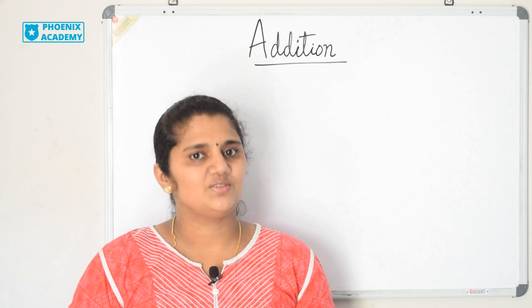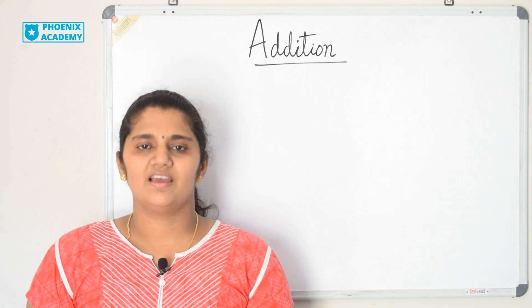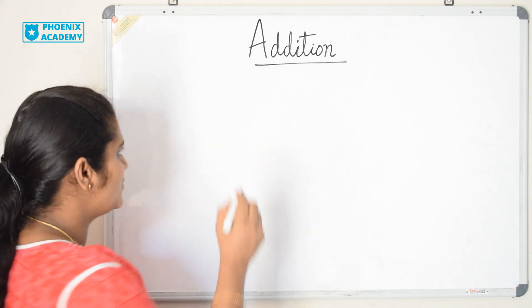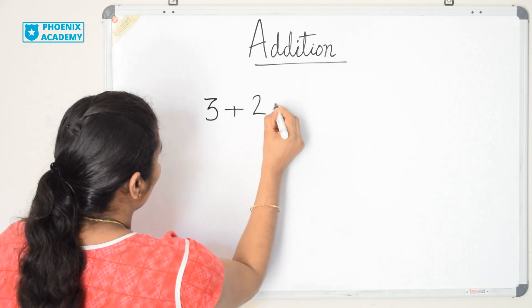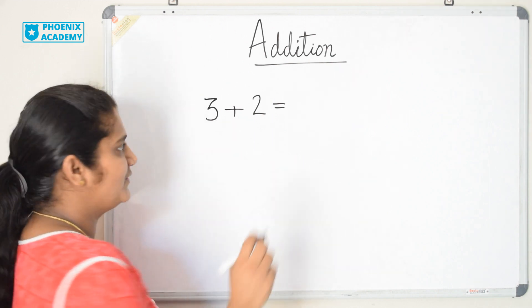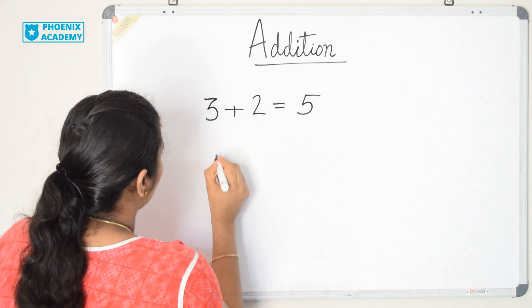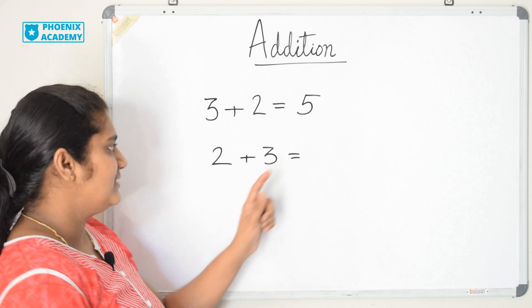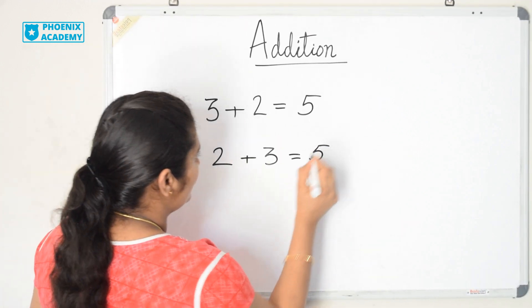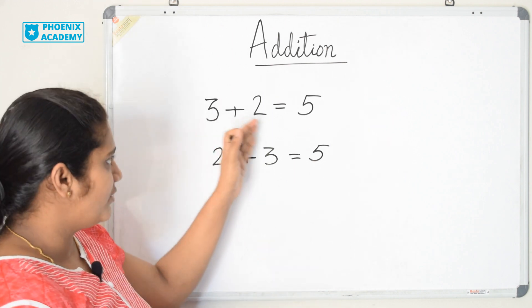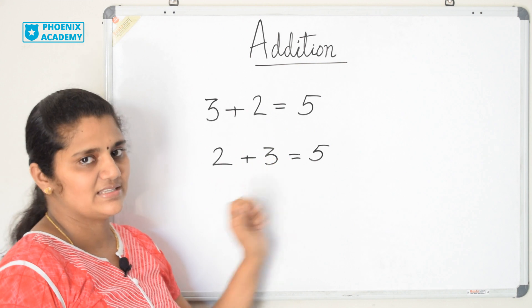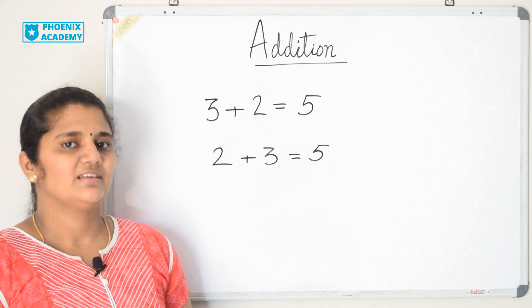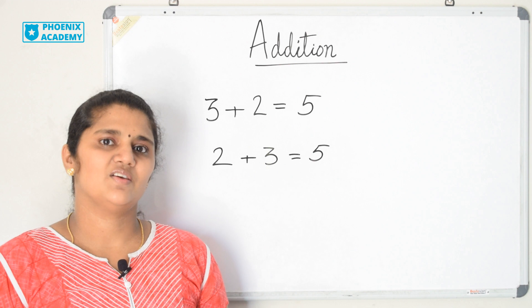Addition is combining two or more things or objects together and counting the combined collection. What is 3 plus 2? 3 plus 2 is 5. And what is 2 plus 3? This is also 5. So in class 2, you learnt the order of the numbers to be added does not change the sum. And what is the answer of adding 0 to any number? The same number itself. In many ways, we can do addition.